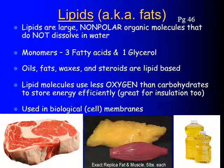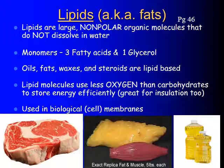Moving on to our second type of polymer: lipids, also known as fats. Lipids are large, nonpolar organic molecules that do not dissolve in water — if you've ever done any cooking, you know that already. Their monomers are a bit different: unlike the others, they don't make a nice neat chain. Their monomers are three fatty acids and one glycerol molecule. Oils, fats, waxes, and steroids are all lipid-based. They use oxygen very little, and because of this they store energy very easily. They're also great for insulation and are used in cell membranes.